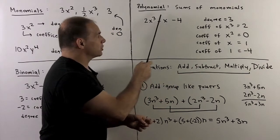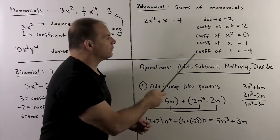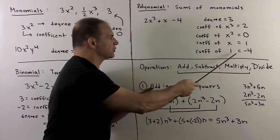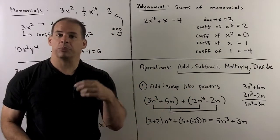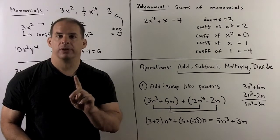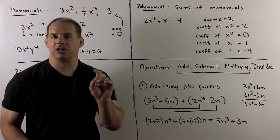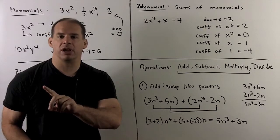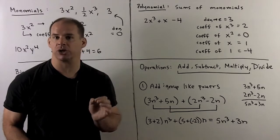The coefficient of x is equal to 1, since x equals 1 times x. The coefficient of the constant term is just minus 4. We want to get proficient at manipulating polynomials. The operations we're interested in are addition, subtraction, multiplication, and division. We'll handle the first three in this video and save division for the next one, which requires special care.